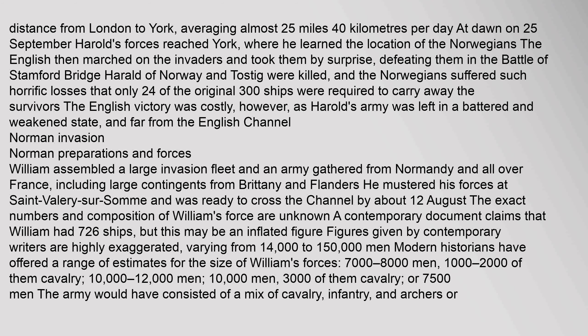William assembled a large invasion fleet and an army gathered from Normandy and all over France, including large contingents from Brittany and Flanders. He mustered his forces at St. Valéry-sur-Somme and was ready to cross the Channel by about 12 August. The exact numbers and composition of William's force are unknown. A contemporary document claims that William had 726 ships, but this may be an inflated figure. Figures given by contemporary writers are highly exaggerated, varying from 14,000 to 150,000 men. Modern historians have offered a range of estimates: 7,000–8,000 men (1,000–2,000 of them cavalry), 10,000–12,000 men, or 7,500 men.